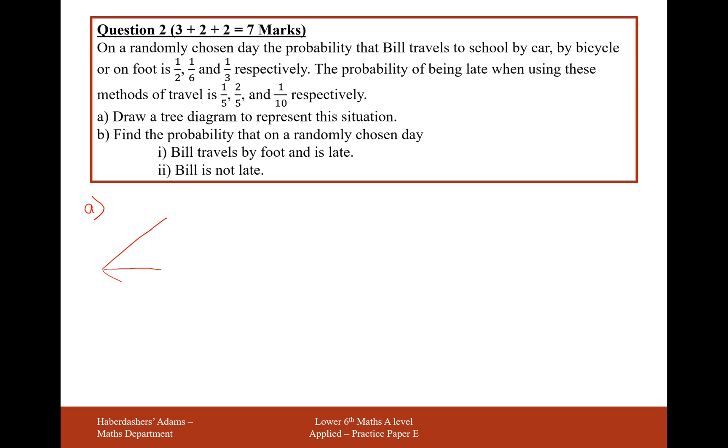So Bill travels to school with three different methods of transport. First is by car, second is by bike, and third is by foot. And he's late with the associated probabilities. So traveling by car is a half probability, by bike is one day out of six, and by foot is one day out of every three. And then he's either late or on time with the respective probabilities: a fifth, two fifths, and a tenth.